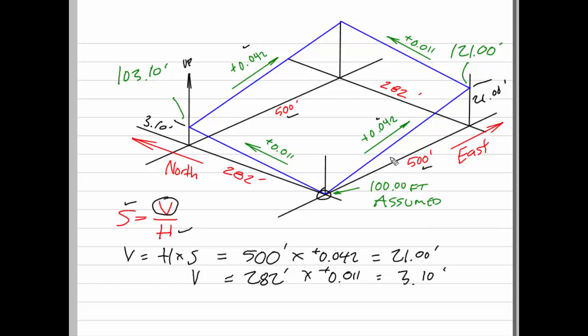Just as we had a rise of 21 feet along the south edge, we will also have the same rise along the north edge. So when I add 103.10 and 21.0 feet, I will get 124.10 feet and that is the elevation at that corner.